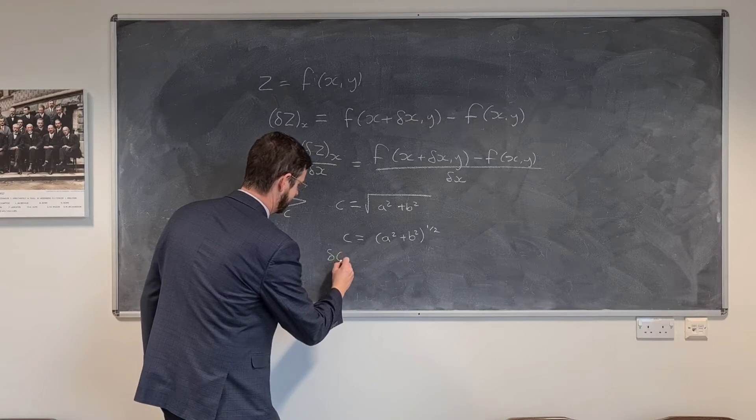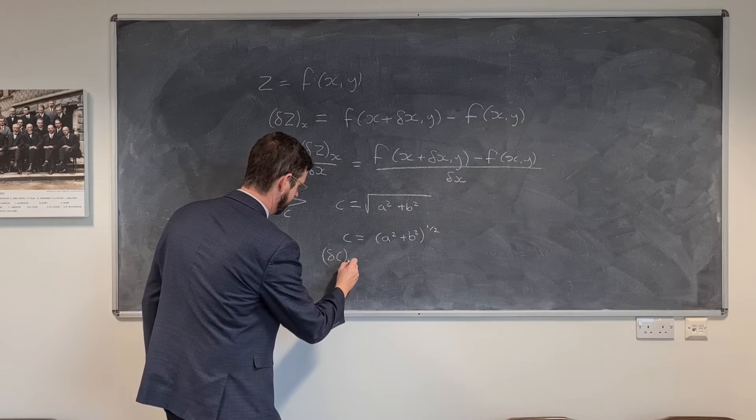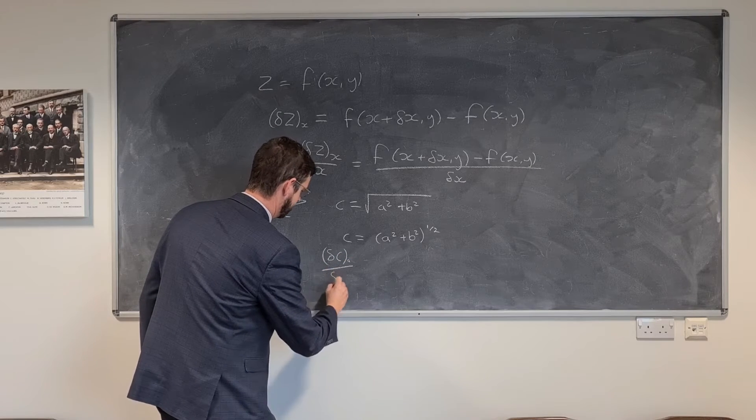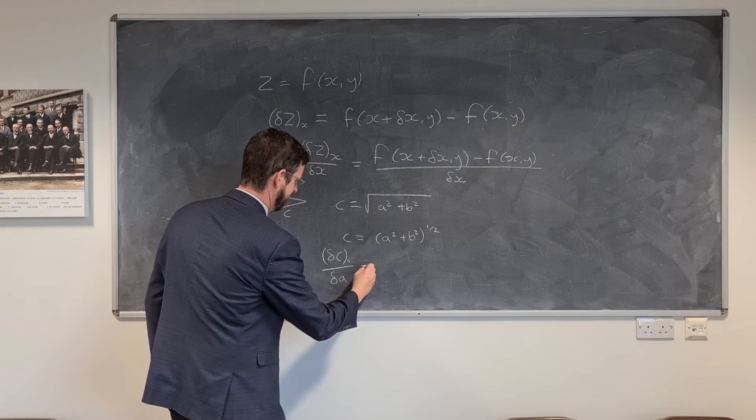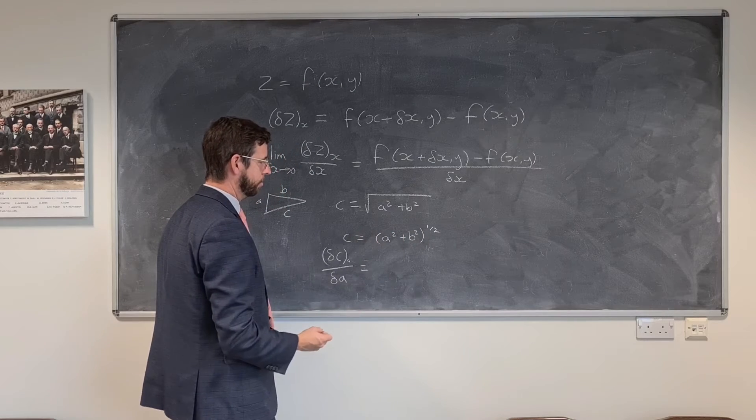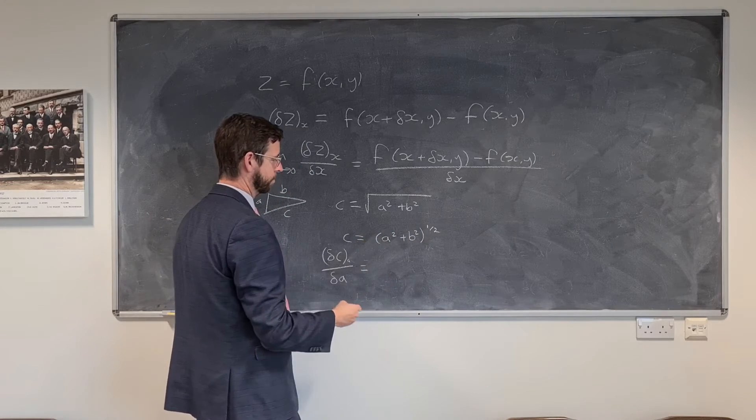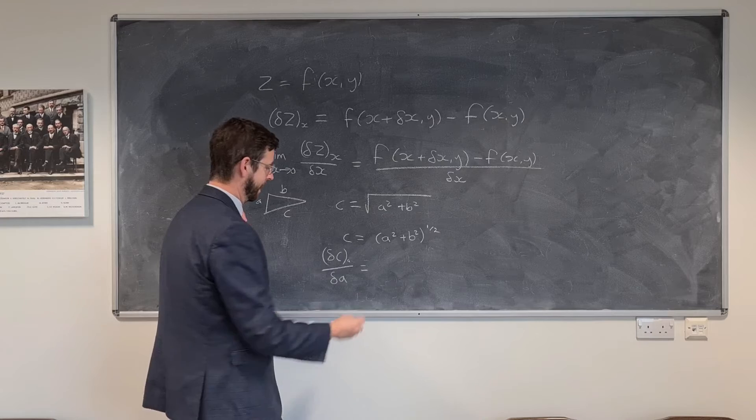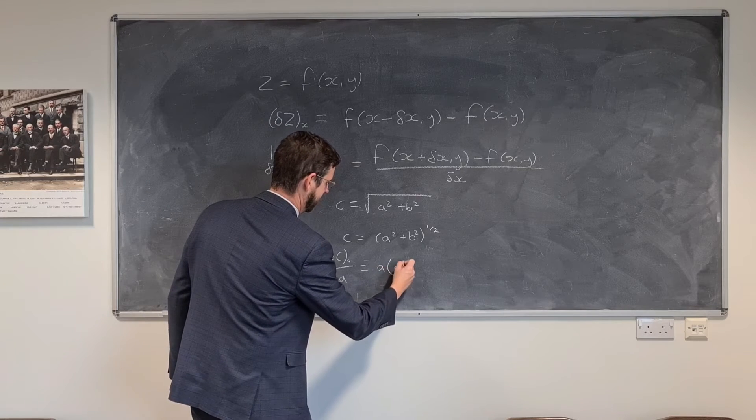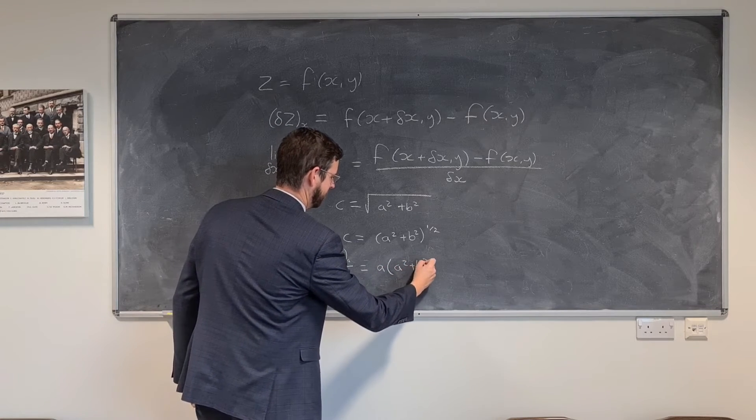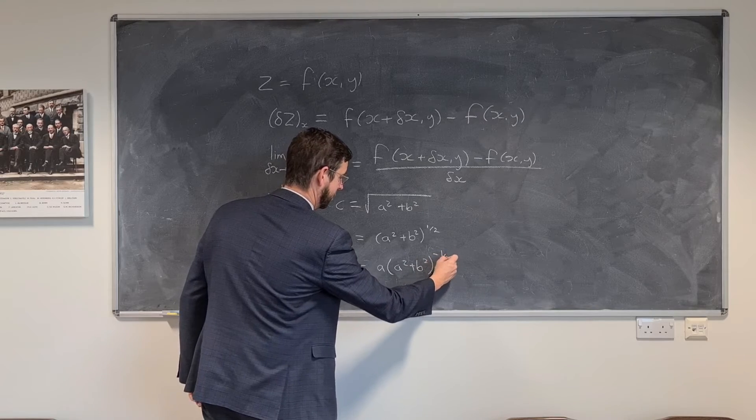Well, I'm going to do dc with respect to dA, and therefore I would then apply the usual rules of differentiation as if this was the square root of a squared. So therefore it would be a, a squared plus b squared,